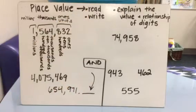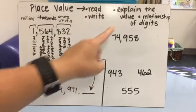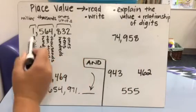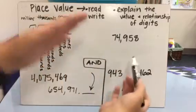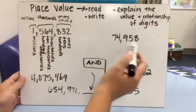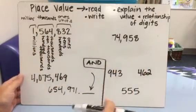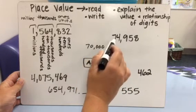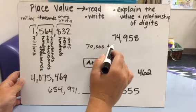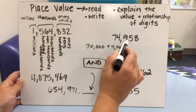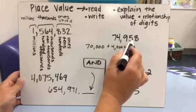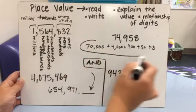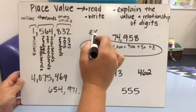All right. So moving on, we've talked about the reading and the writing of numbers. Now we're going to talk about explaining the value of digits. So they need to know that these place values have different values when we look at the digits. They need to be able to know that this number 74,958 is actually 70,000 plus 4,000 plus 900 plus 50 plus 8.